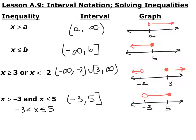For x less than or equal to b, anytime you have an 'or equal to,' that's going to be a bracket. We want everything from negative infinity up to b, including b, but not including infinity. On your graph, you'd have a closed circle on b because we want to include it as a solution to the inequality, and we want everything less than, so we go towards the negatives.